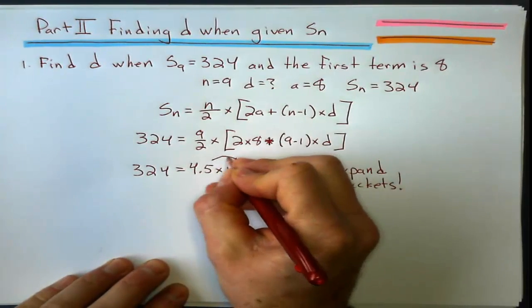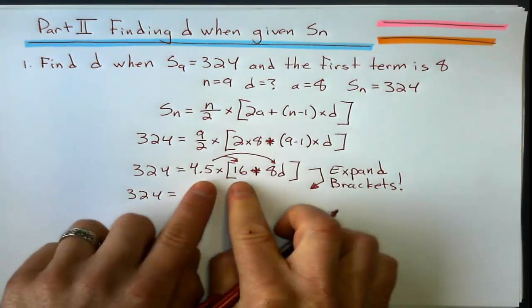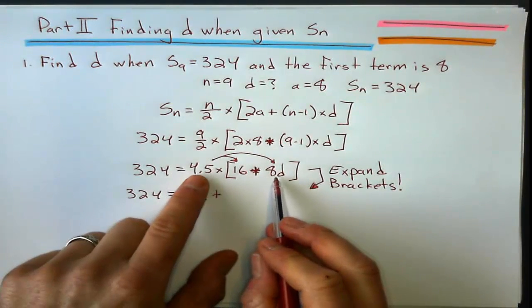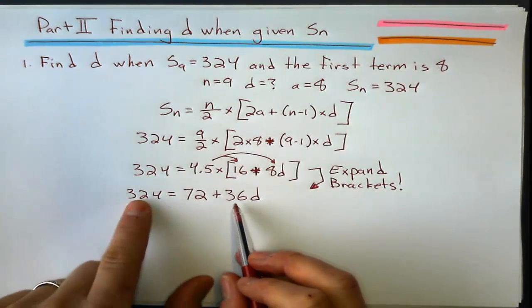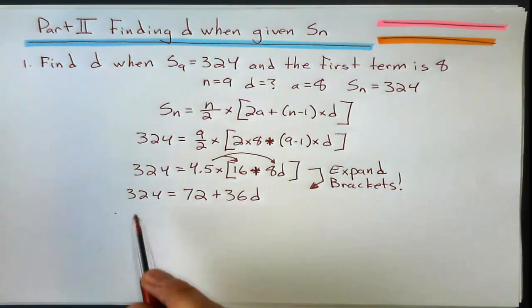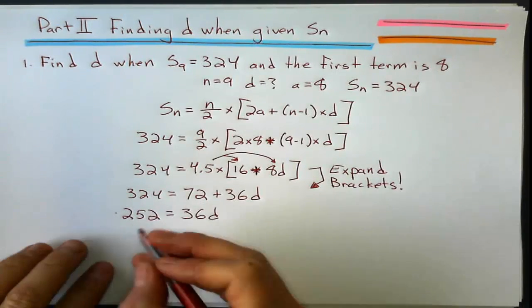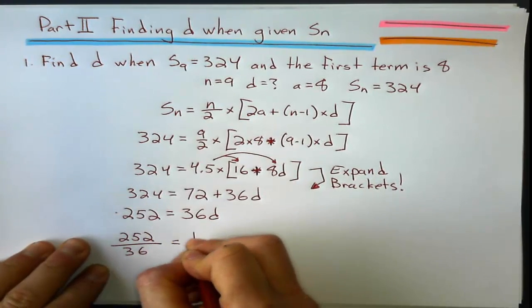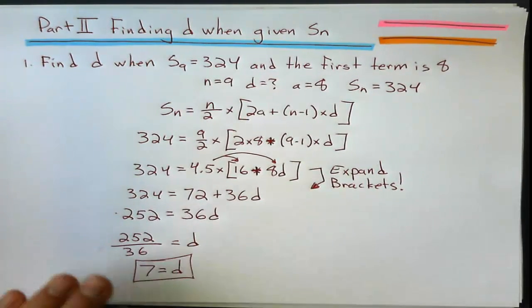Now, the only way to simplify this guy is to expand brackets. So 324 equals 4.5 times 16, 72, plus 4.5 times 8D. Well, what's that going to give me? 36D. Now I'm at a two-step equation. Subtract 72 from the other side, and what do I get there? 324 minus 72, and then my last step is going to be to divide by 36. 252 divided by 36 equals D, and hopefully that's a whole number. It should be. And I get a common difference of 7.